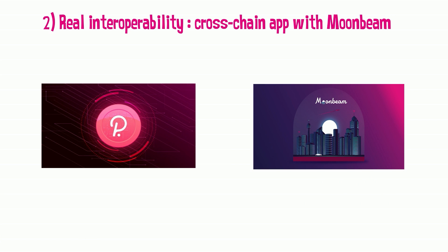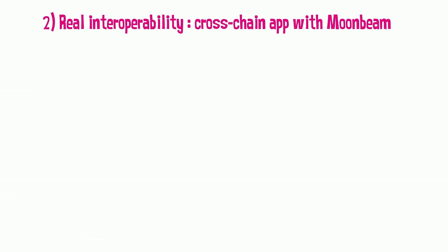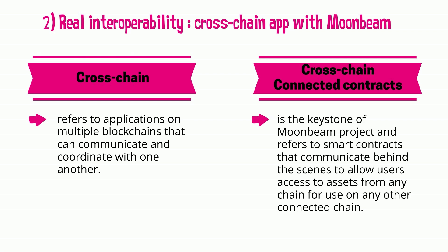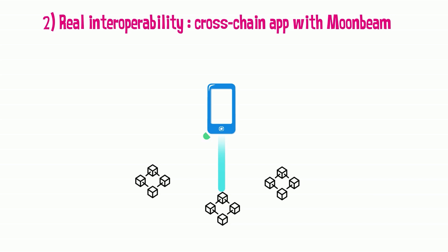If you don't know about Polkadot and Moonbeam, we recommend that you watch our video on Polkadot first, so you may have a better understanding of the whole ecosystem. Cross-chain refers to applications on multiple blockchains that can communicate and coordinate with one another. Cross-chain connected contracts is the keystone of the Moonbeam project and refers to smart contracts that communicate behind the scenes to allow users access to assets from any chain for use on any other connected chain.